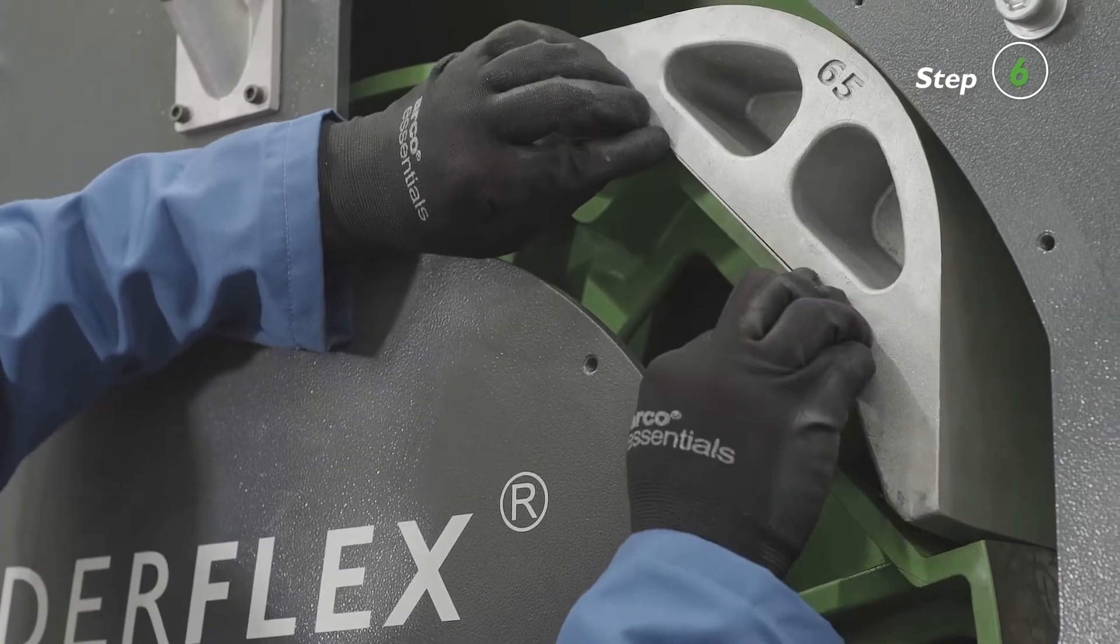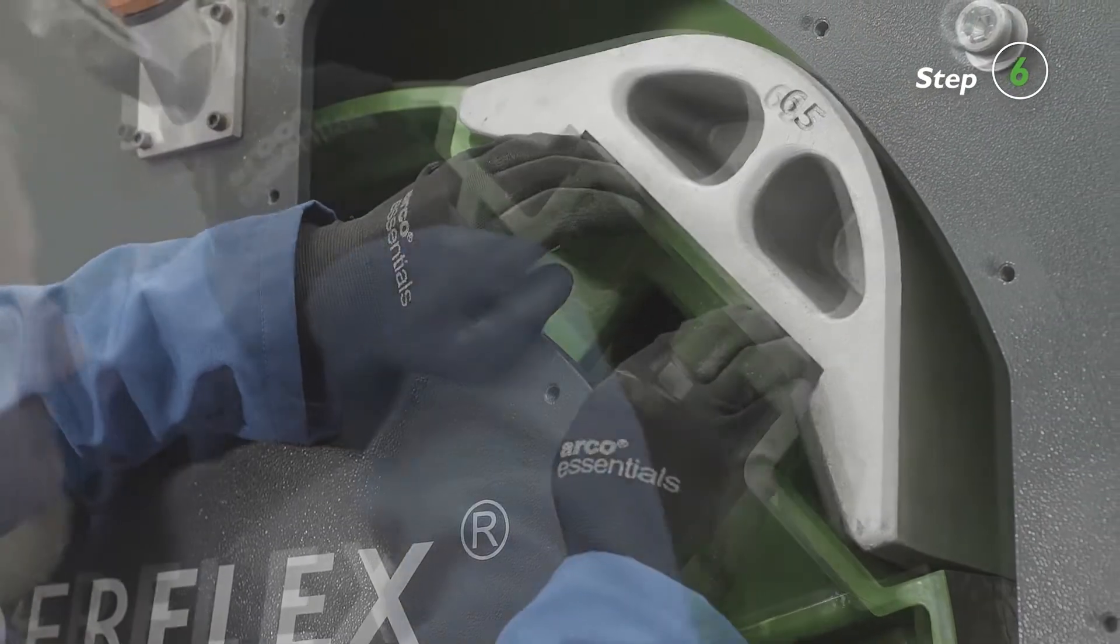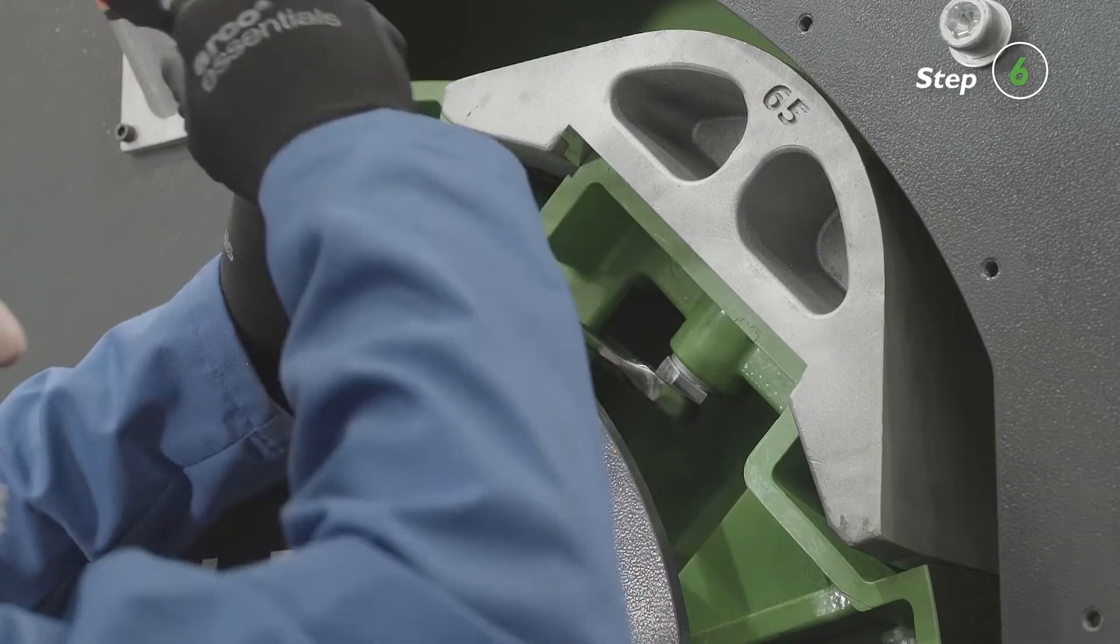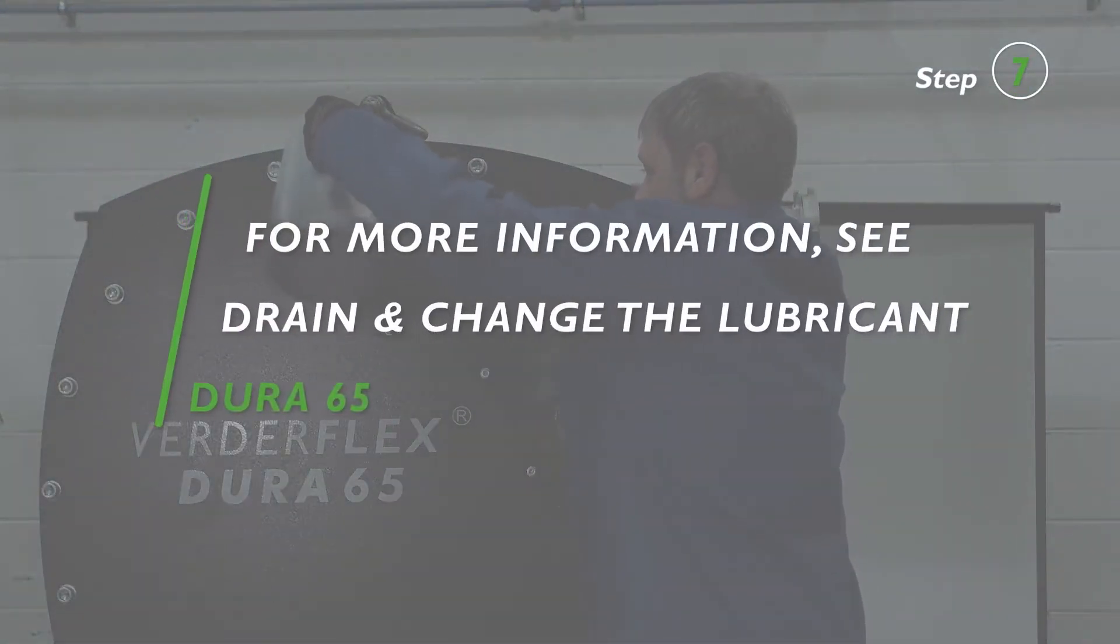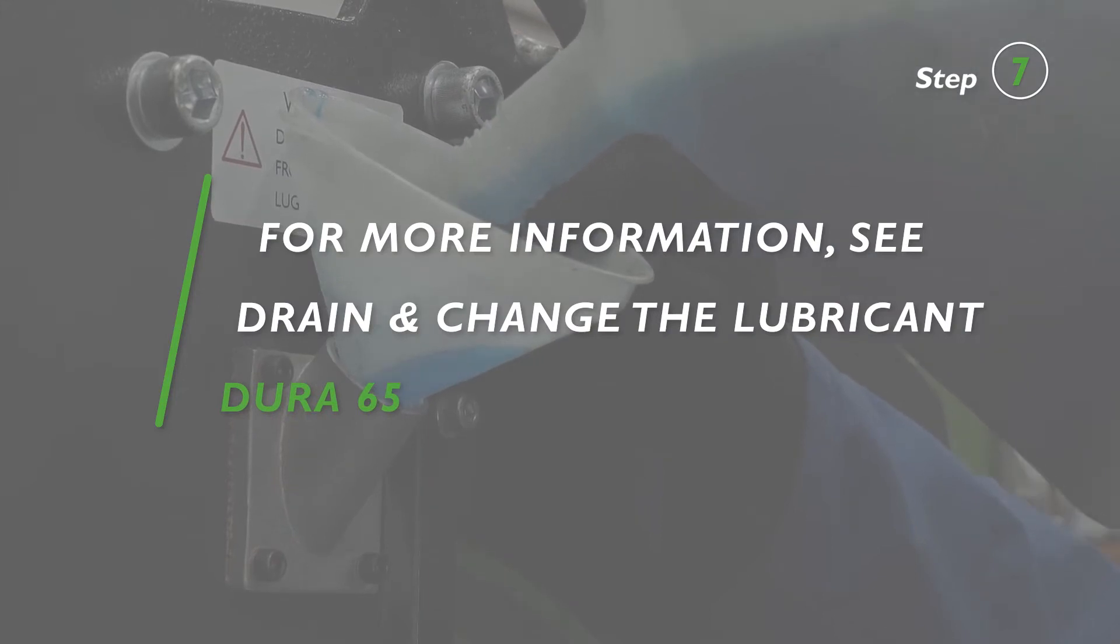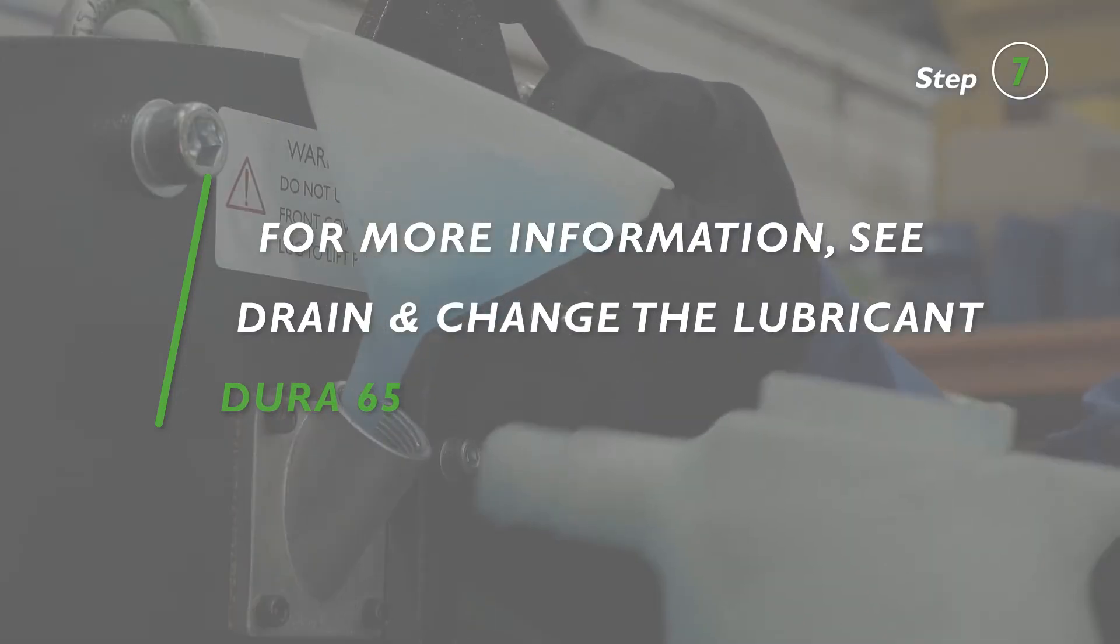Repeat the steps to complete assembly for the other rotor shoe. The pump housing can be filled with lubricant through the filler port. Please watch our tutorial on how to change or drain the lubricant.